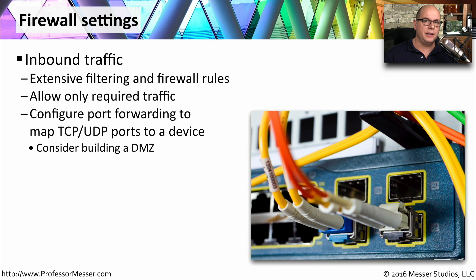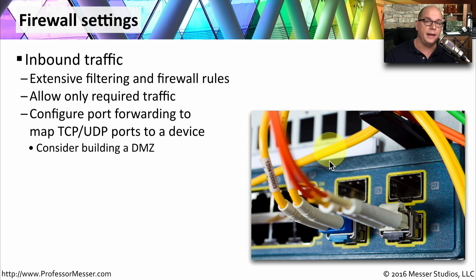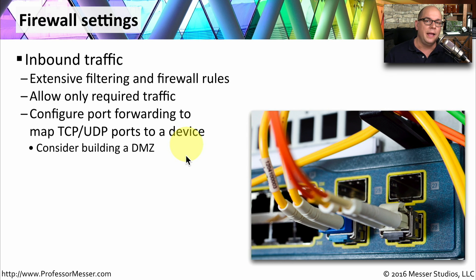If you have servers on the inside of your SOHO network that you need to make available to people on the outside, you'll want to configure firewall settings for inbound traffic. You want to limit inbound traffic to only the required types — you don't want to simply open the door and let everyone in. You should configure port forwarding to map a specific TCP or UDP port number or port range to a specific IP address on the inside of your network. If you find yourself doing this a lot, you may want to consider creating a DMZ that's not on the inside of your network, while still providing control over traffic from the outside.